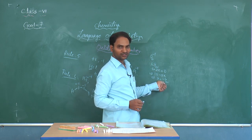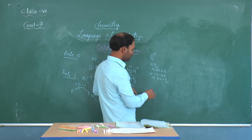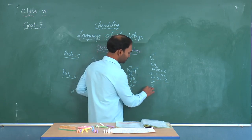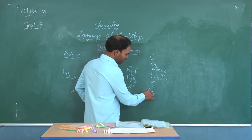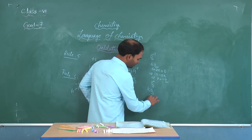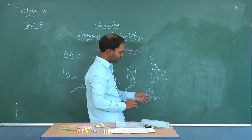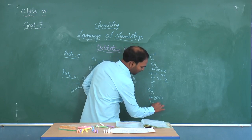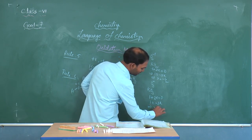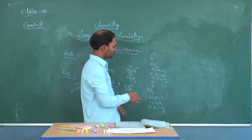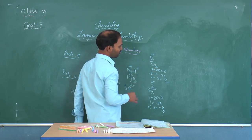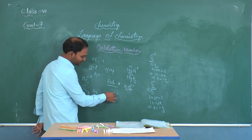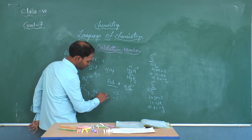In the case of ozonides, oxygen exhibits -1/3 oxidation state. For example, take KO3: potassium has oxidation state +1, and for three oxygen atoms: 1 + 3x = 0, so x = -1/3. To summarize: in ozonides it is -1/3, in superoxides it is -1/2, and in peroxides it is -1.